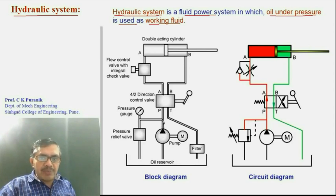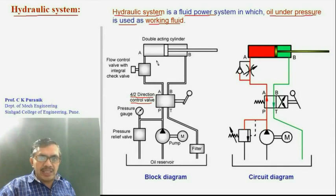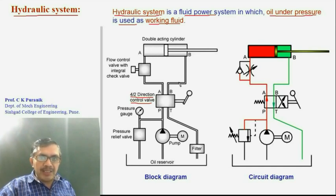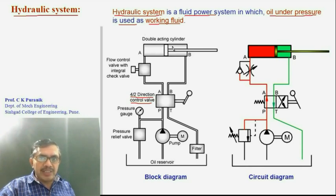Oil coming out of the pump goes through a 4 by 2 direction control valve, which controls the direction of flow of oil either in a clockwise or anticlockwise direction. If oil flows from P to A and B to T, the cylinder will extend. If oil flows from P to B and A to T, the cylinder will retract. The direction control valve controls the motion of a double acting cylinder.